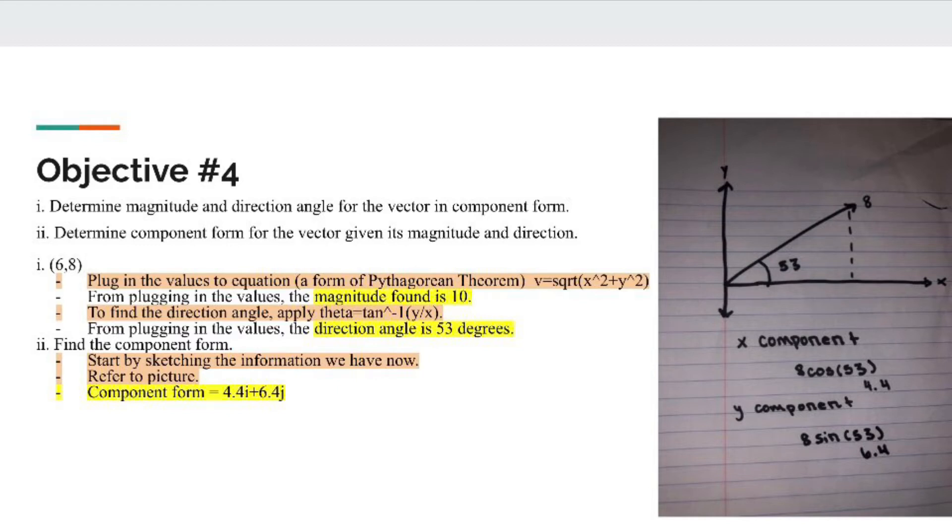Next, they want us to find the component form, so I sketched a triangle. I got the x component by doing 8 cosine of 53, which is 4.4, and the y component is 8 sine 53, which is 6.4. This means our answer for component form is 4.4i plus 6.4j.